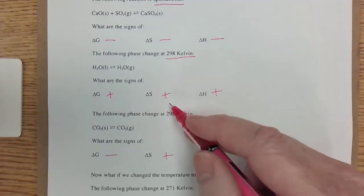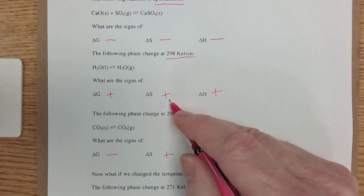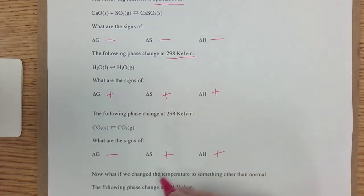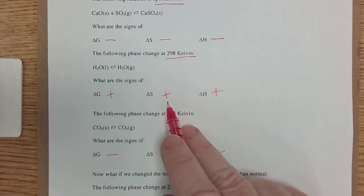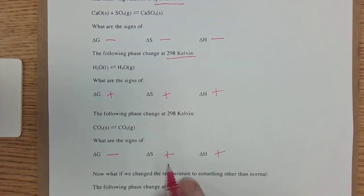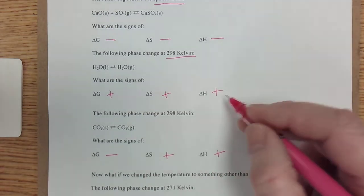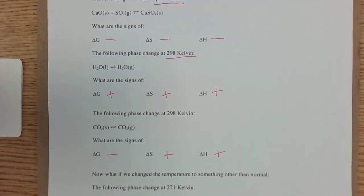So here, ΔS negative was a driving force—no, that wasn't. ΔS positive is a driving force. Did I say negative there? I meant positive. ΔS positive is the driving force. Those are not driving forces for us.